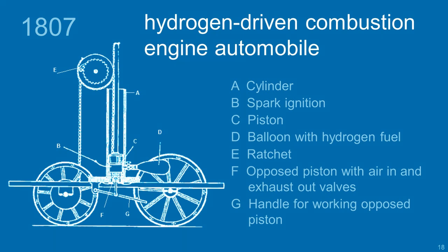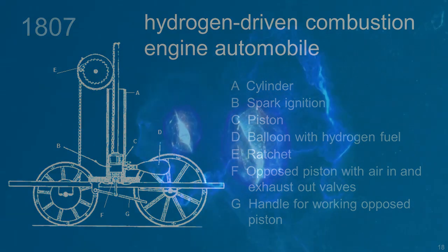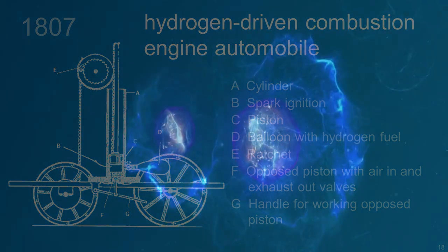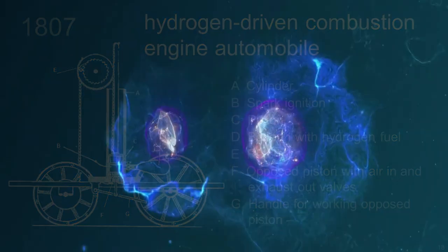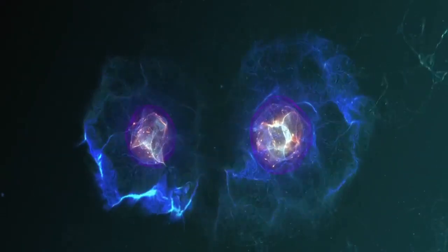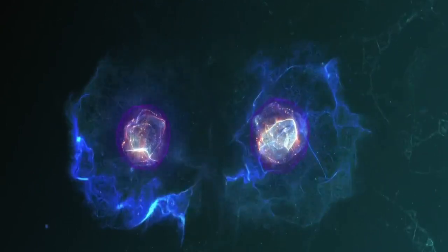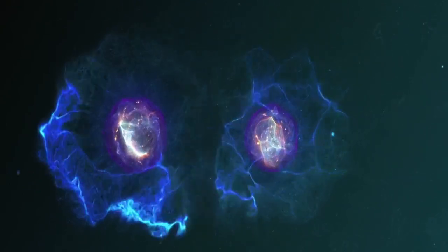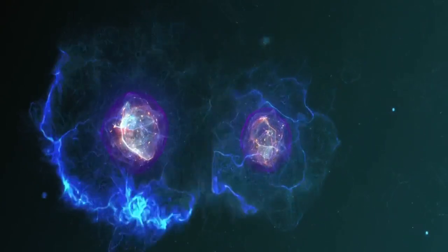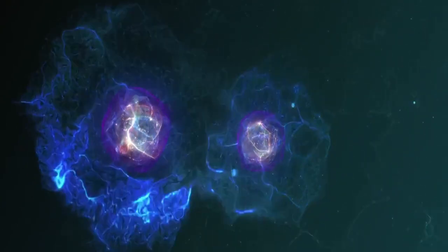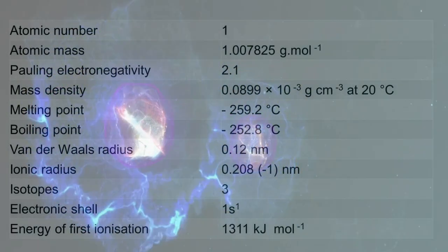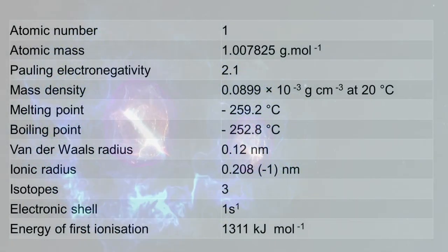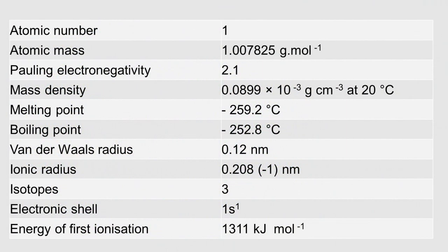Let us look at some features of hydrogen. It is the first element in the periodic table with an atomic number of one and an atomic weight of about one gram per mole. Its most frequent isotope has a proton as a nucleus and one electron.